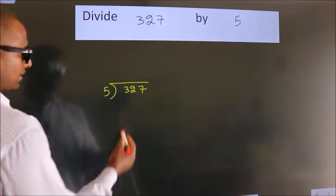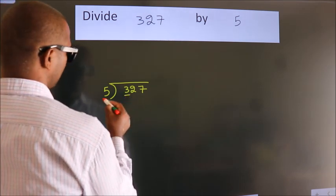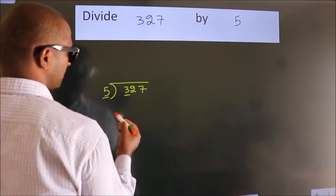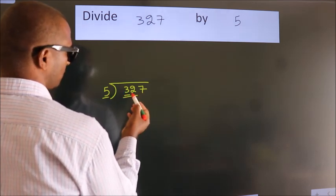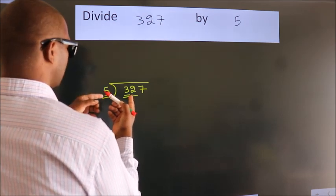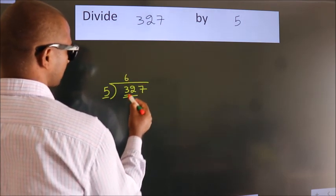Next, here we have 3. Here 5. 3 is smaller than 5, so we should take 2 numbers: 32. A number close to 32 in the 5 table is 5 times 6, which is 30.